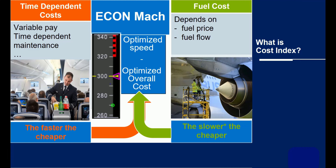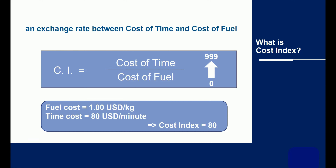Now this is what Cost Index does. Cost Index is an exchange rate between the cost of time and the cost of fuel. A high Cost Index means that for your airline, flight time is very important. A low Cost Index means that fuel costs dominate. As an example, a Cost Index of 80 means that one minute more flying time costs the same as 80 kilograms of fuel.